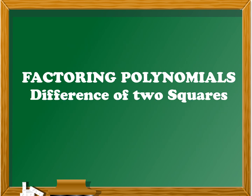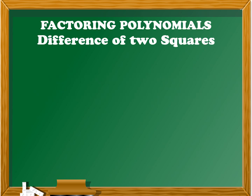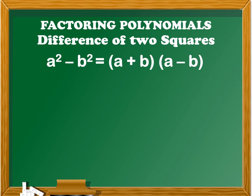Next, we will discuss difference of two squares. The formula for the difference of two squares: a squared minus b squared is equal to the quantity of a plus b times the quantity of a minus b.